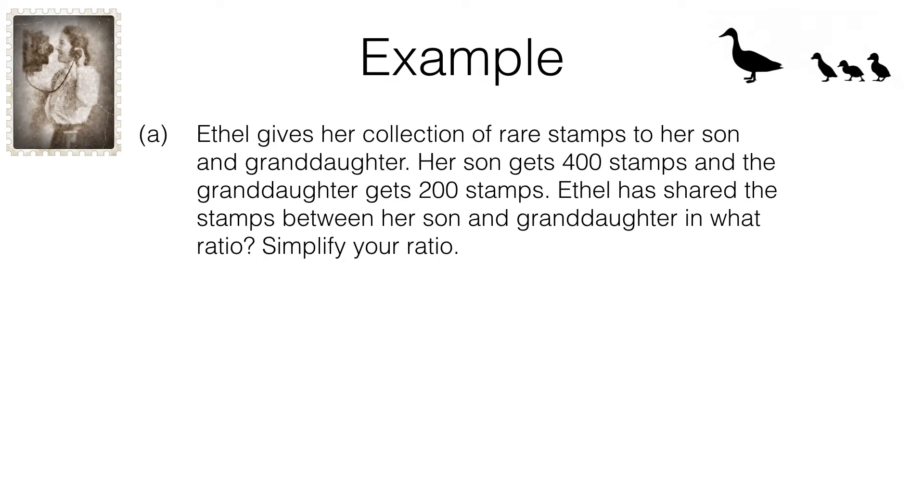Well we've got the son first and then the granddaughter. The son gets 400 stamps and the granddaughter gets 200 stamps. So that's a ratio of 400 to 200. We haven't finished yet. That does need to be simplified but we can see that the highest common factor of these is 200. 200 goes into 400 twice and 200 goes into 200 once. So we have simplified that ratio to 2 to 1.